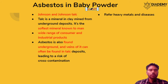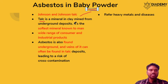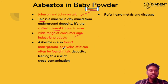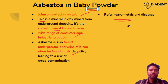In the Johnson and Johnson talc case, asbestos was found in the talc product. Talc is the softest mineral known and has a wide range of applications. It is found in underground deposits and veins. Asbestos found in talc is a heavy metal-like substance that can cause serious diseases.